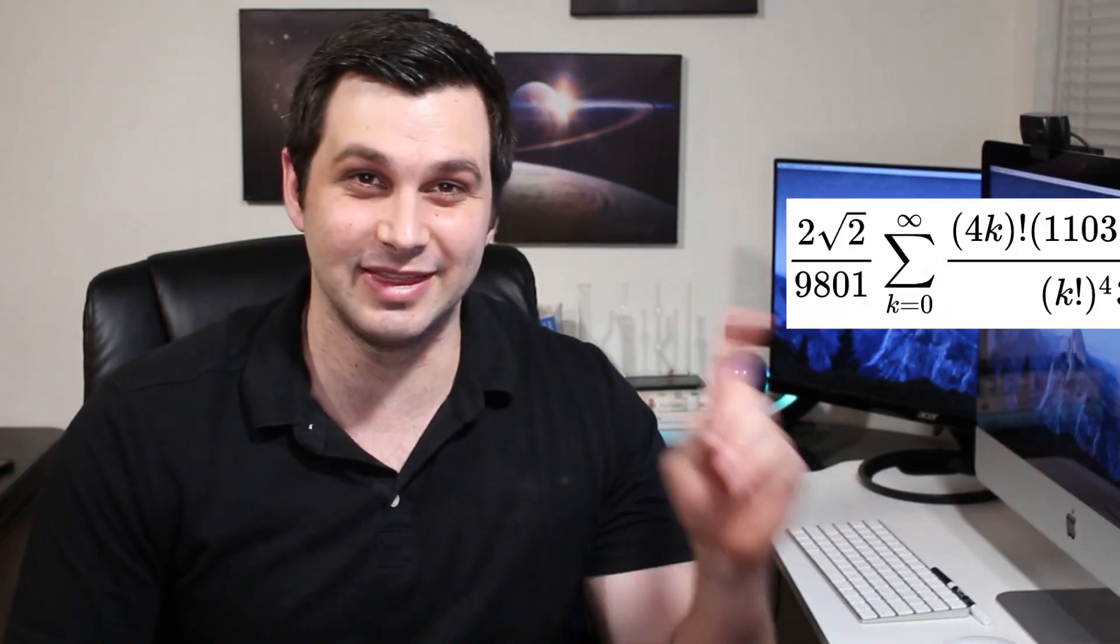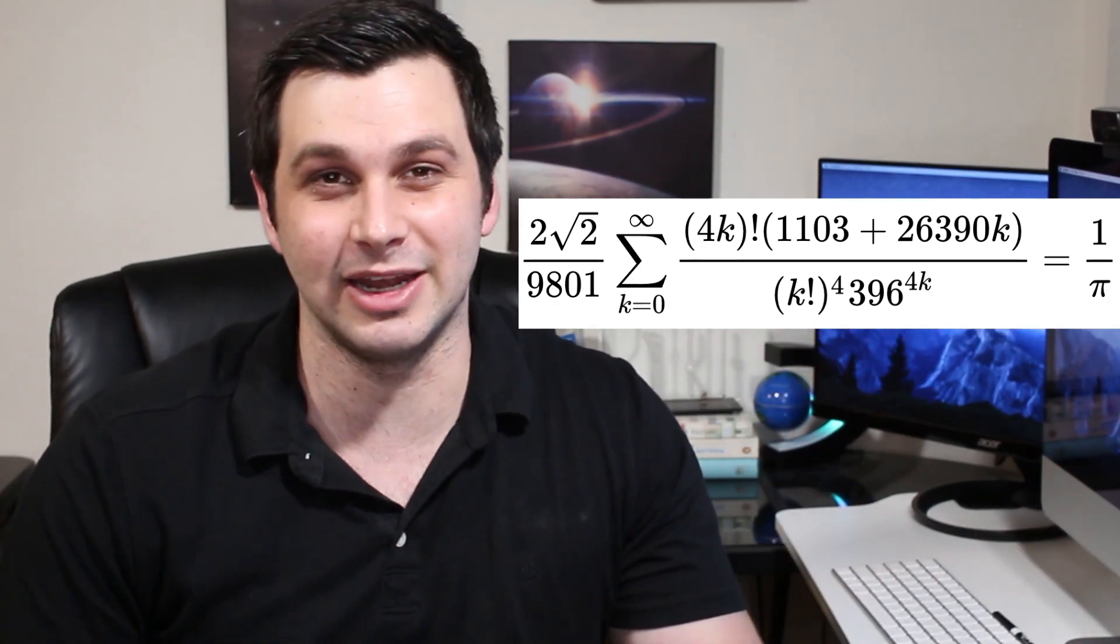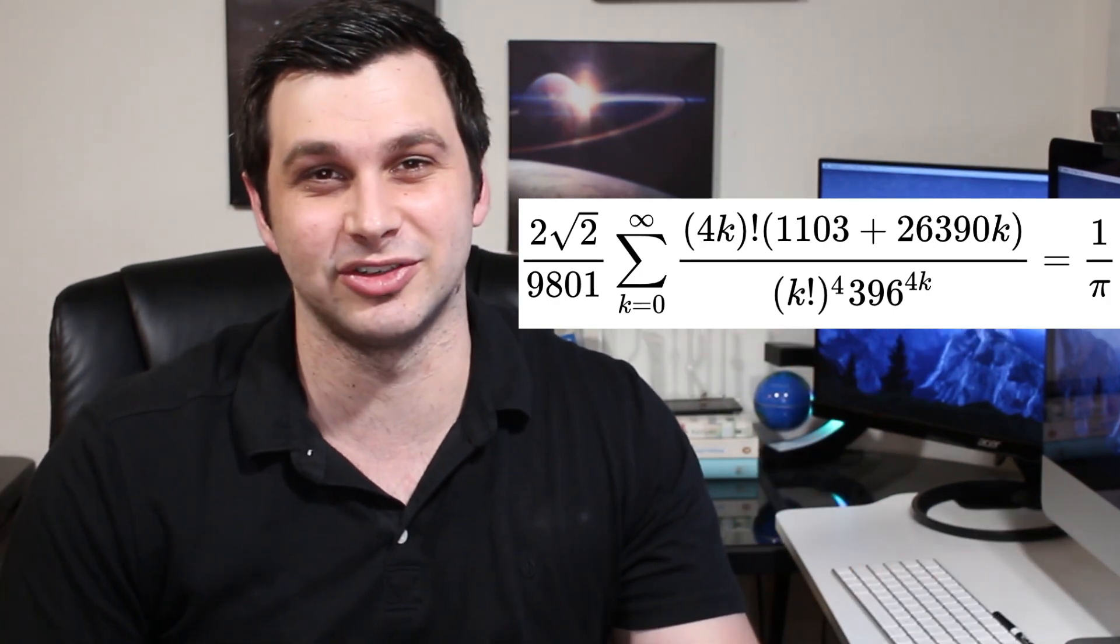But after seeing explanations for several other similar series that had all those integers on the denominator, it's not too surprising that something like this would end up equaling pi. However, it's series like these that take it to a whole new level. This is Ramanujan's formula for calculating pi, and although it looks crazy, it's extremely efficient.